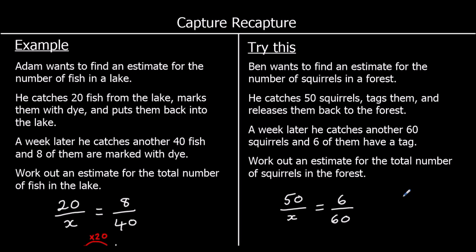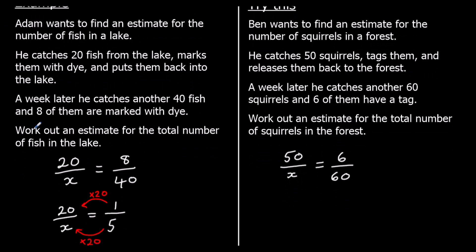Work out an estimate for the total number of squirrels. So find this x. Find the total number of squirrels. So again, I'm going to simplify this fraction first. So 6 out of 60. 6 and 60 are both in the 6 times table.